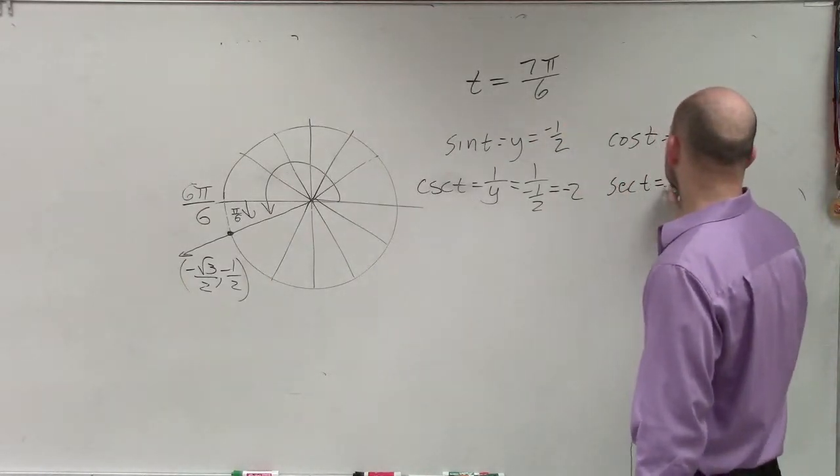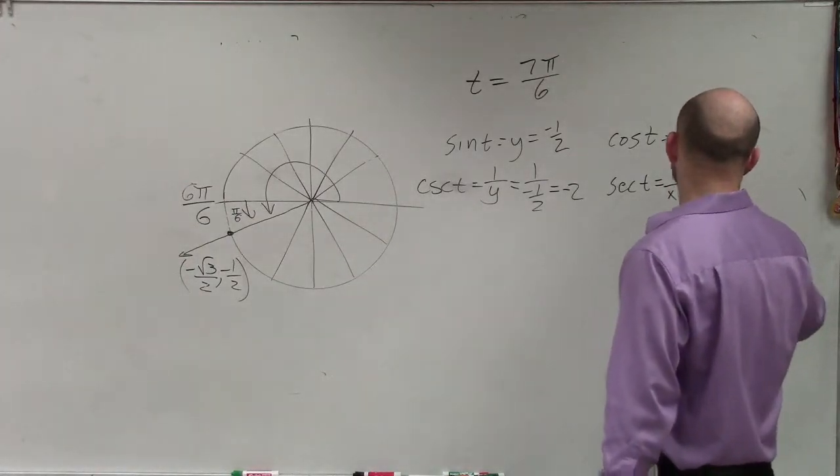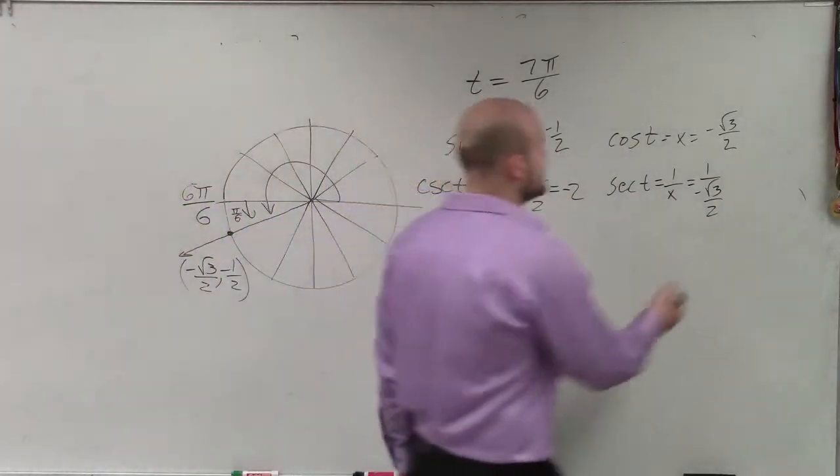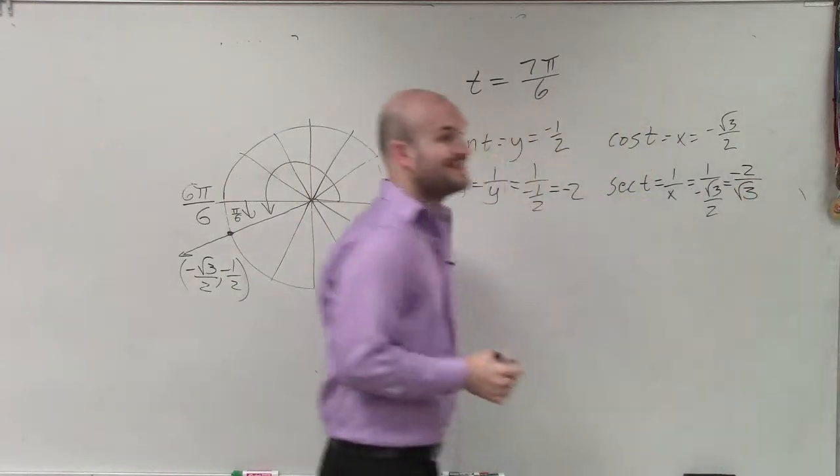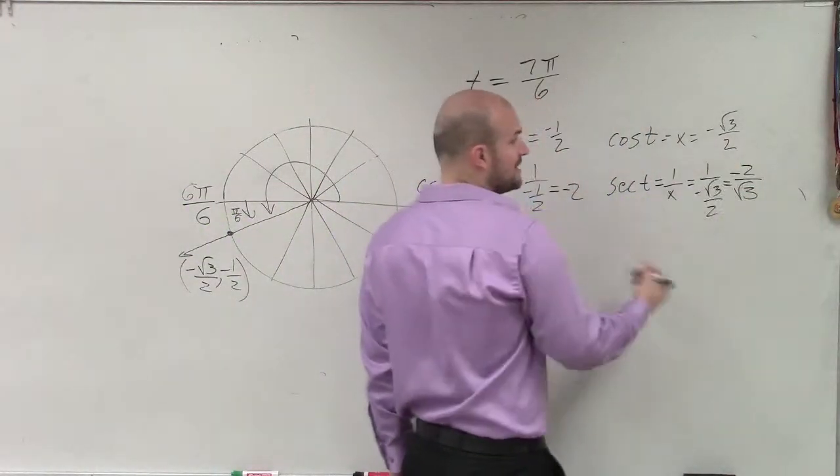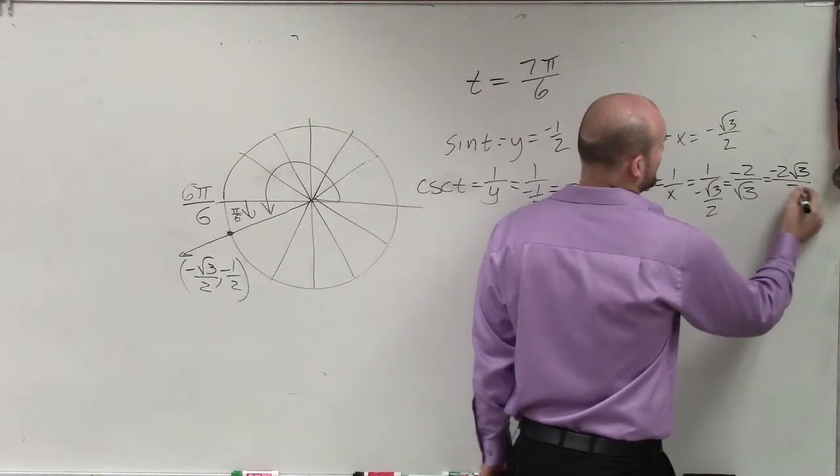Secant of t, which is equal to 1 over x, which is 1 over negative square root of 3 over 2. Again, multiply by the reciprocal. When you multiply by the reciprocal, you're going to have a negative 2 over the square root of 3. Then you have to rationalize the denominator, multiply by the square root of 3 on the top and bottom, and your final answer would be negative 2 square root of 3 over 3.